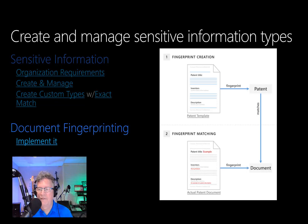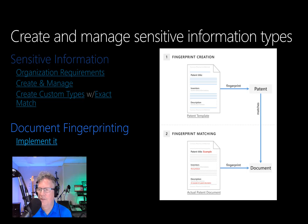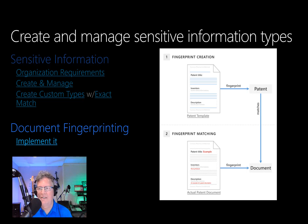In the Security and Compliance Center, document fingerprinting makes it easier to protect information by identifying standard forms used throughout your organization. Document fingerprinting is a data loss prevention feature that converts a standard form into a sensitive information type, which you can use in the rules of your DLP policies. For example, you can create a document fingerprint based on a blank patent template, and then create a DLP policy that detects and blocks all outgoing patent templates with sensitive content filled in.